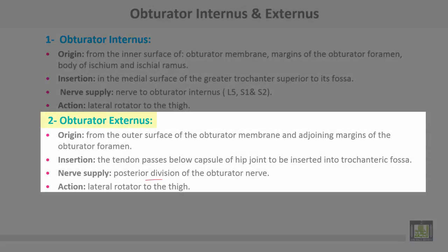Obturator externus muscle takes origin from the outer surface of the obturator membrane and the adjoining margins of the obturator foramen. Insertion by tendon passing below the hip joint to the trochanteric fossa. Nerve supply from the posterior division of the obturator nerve. Action: lateral rotation of the thigh.